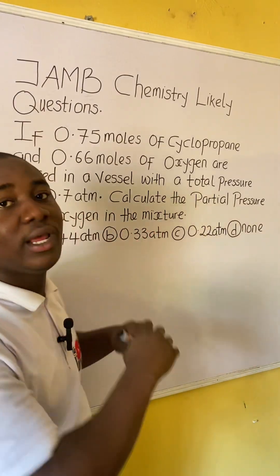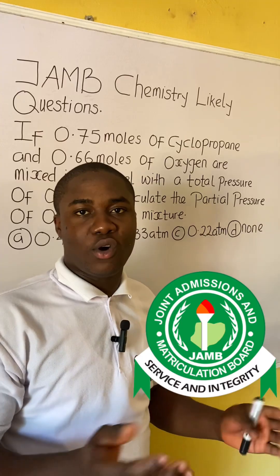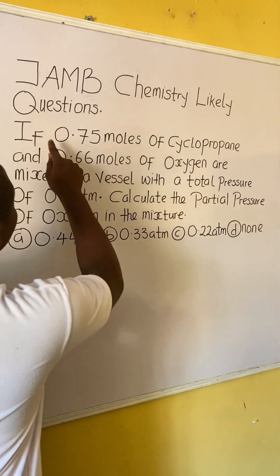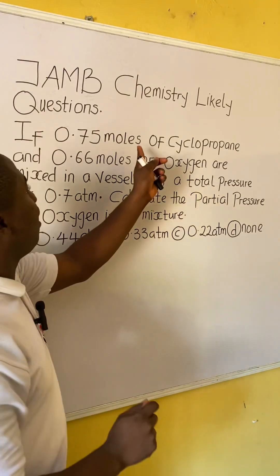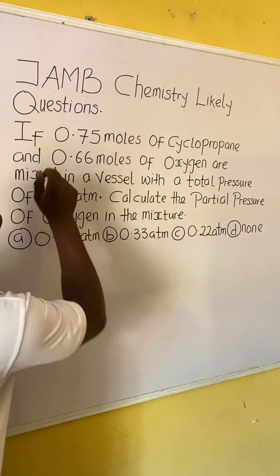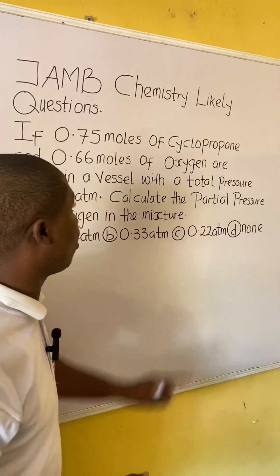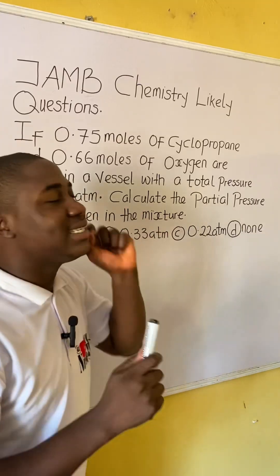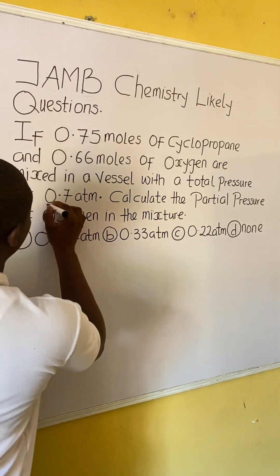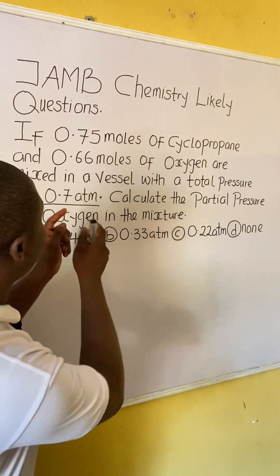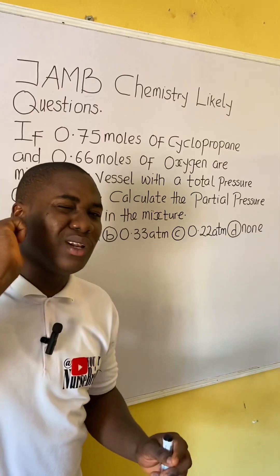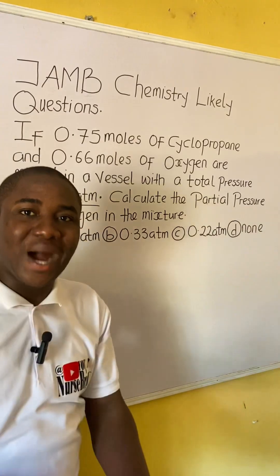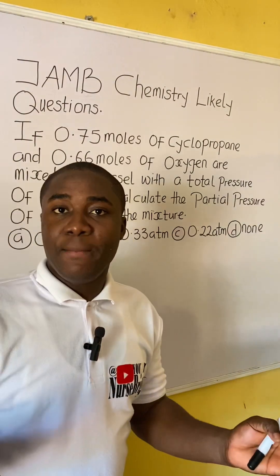You came across this question in your JAMB exam. How will you solve it? It is extremely easy. Now let's solve together. The question says: if 0.75 moles of cyclopropane and 0.66 moles of oxygen are mixed in a vessel with a total pressure of 0.7 atm, calculate the partial pressure of oxygen in the mixture.